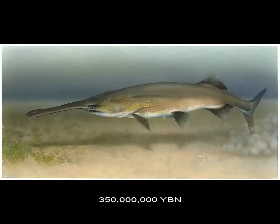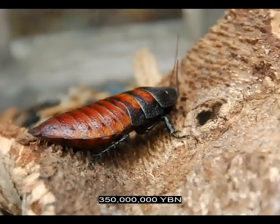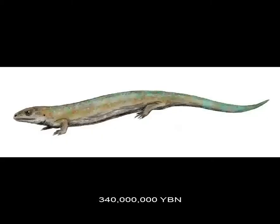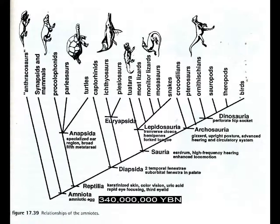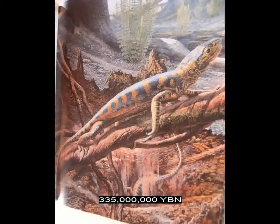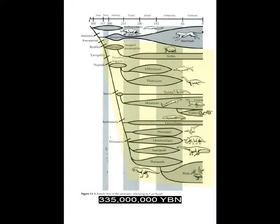Ray-finned fishes: sturgeons and paddlefish. Insects Dictyoptera — cockroaches, termites. The hard shell egg evolves — the Amniota — ancestor of reptiles, mammals, and birds. Start of vertebrate internal fertilization. The tetrapod Amniota divide into the Sauropsida, which includes reptiles and birds, and the Synapsida, which includes mammals.